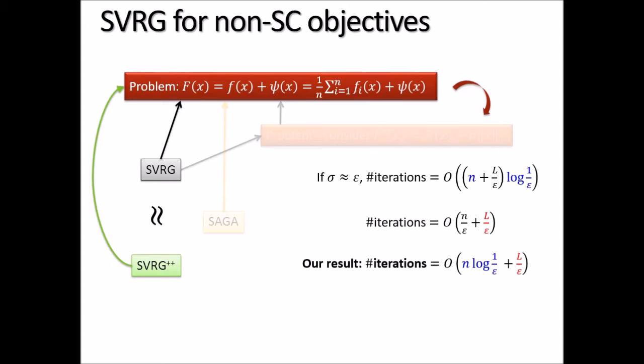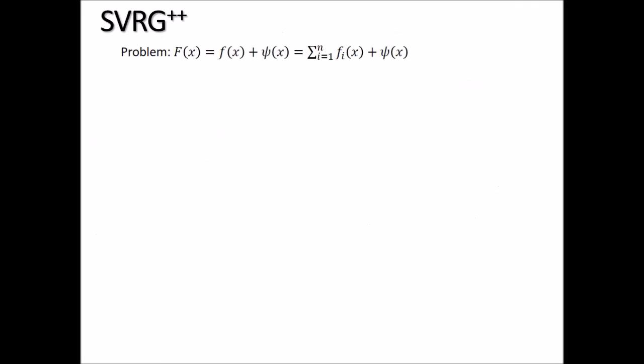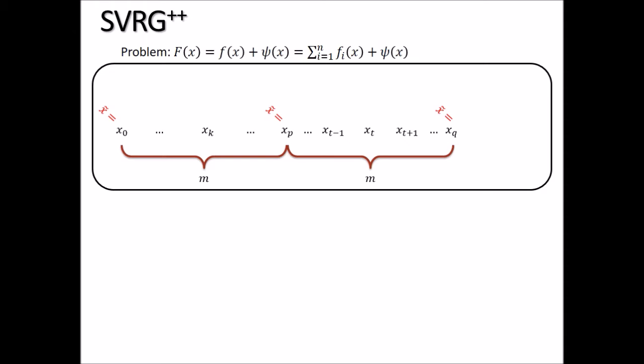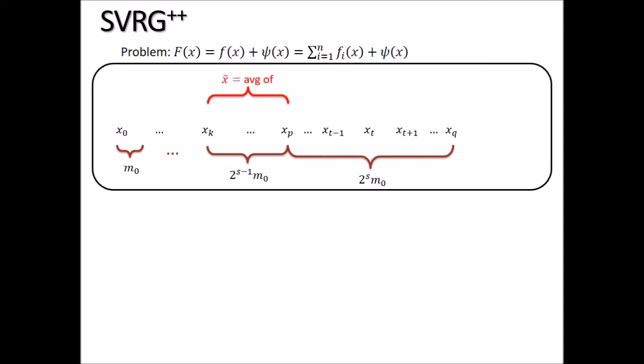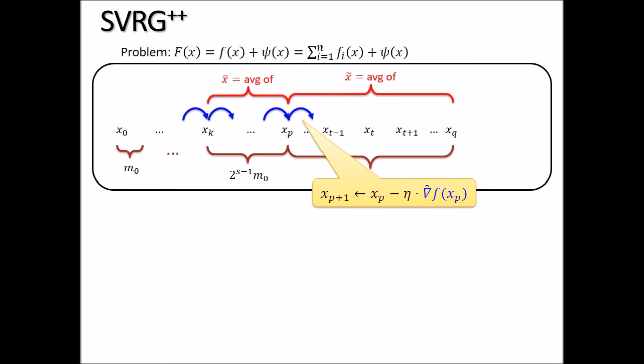Let us see the two modifications. Remember, SVRG divides into epochs. Our first modification is to change the epoch schedule: we make the epoch length double between iterations. The second change is that instead of defining the snapshot as the first point of the epoch, we define it as the uniform average of the most recent epoch. We also do not break the flow of the algorithm — we continue across epochs rather than restarting from the snapshot.